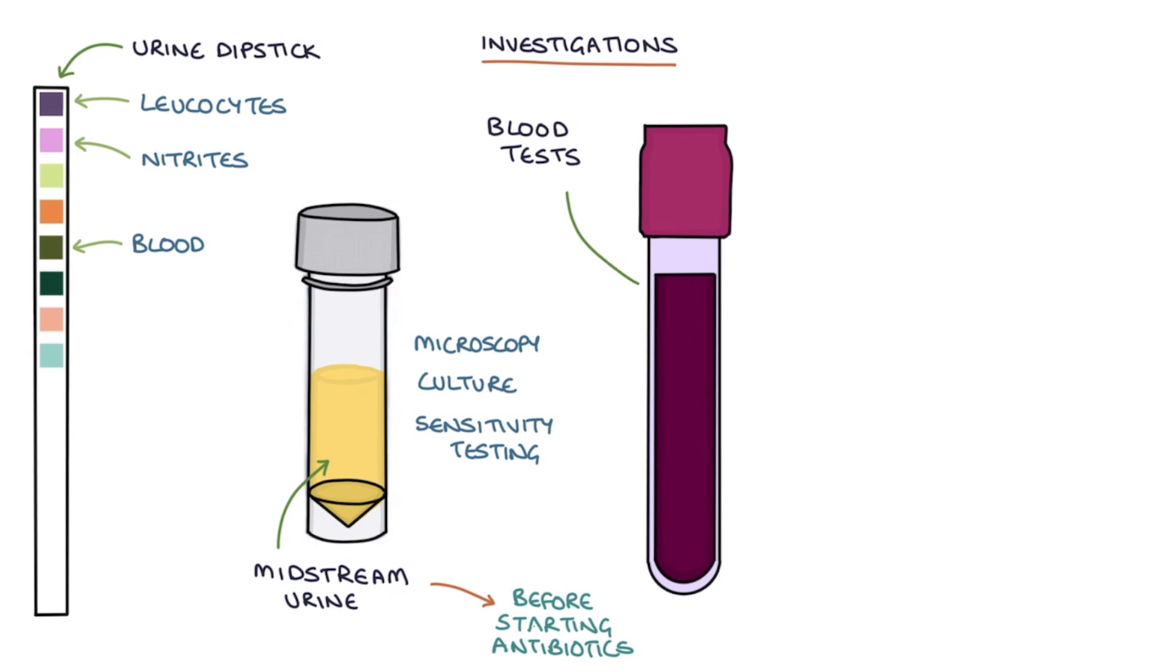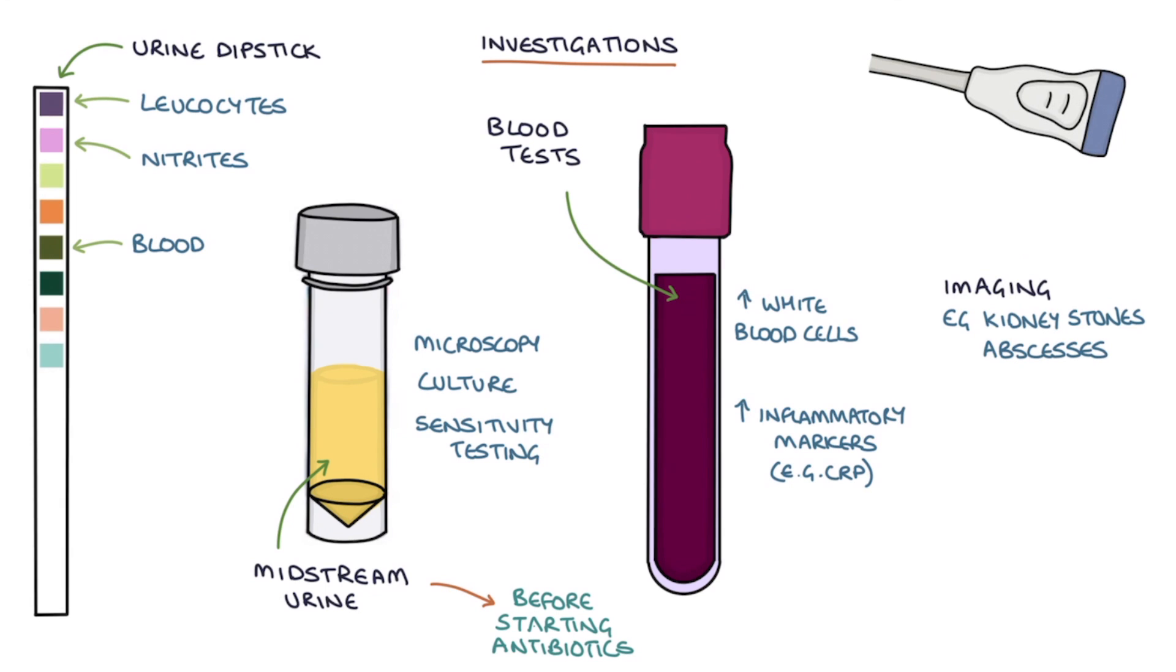Blood tests will show a raised white blood cell count and raised inflammatory markers, for example CRP. Imaging investigations may be used to exclude other pathology such as kidney stones or abscesses. This could be an ultrasound or a CT of the abdomen.